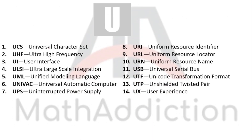UCS: Universal Character Set. ULSI: Ultra Large Scale Integration. UML: Unified Modeling Language. UNIVAC: Universal Automatic Computer. UPS: Uninterrupted Power Supply. URI: Uniform Resource Identifier. URL: Uniform Resource Locator. URN: Uniform Resource Name. USB: Universal Serial Bus. UTF: Unicode Transformation Format. UTP: Unshielded Twisted Pair. UX: User Experience.